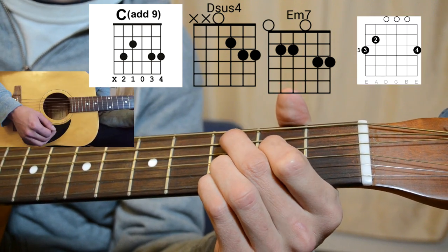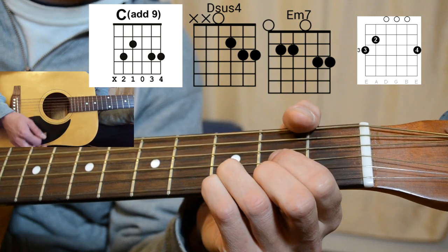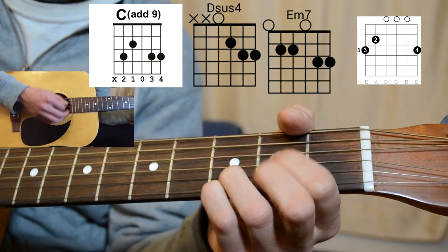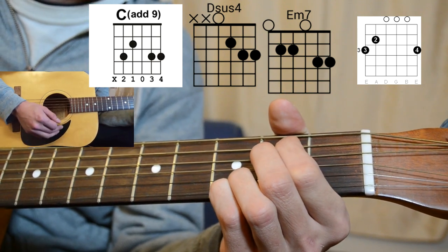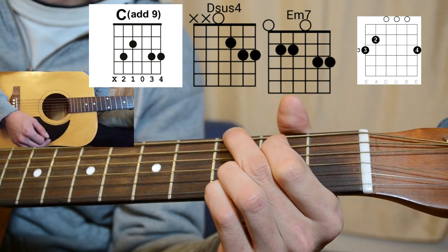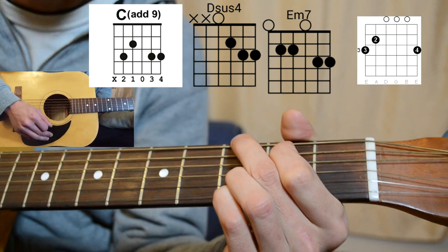So you've got your C add 9, to your D, to your E minor 7th, to your G. That's it for the whole song.